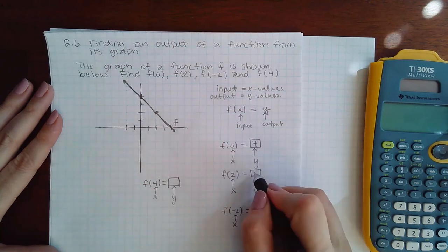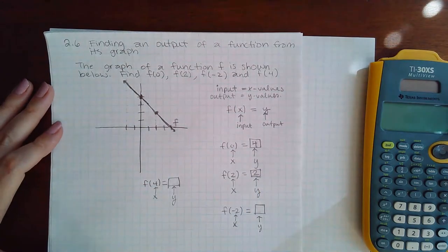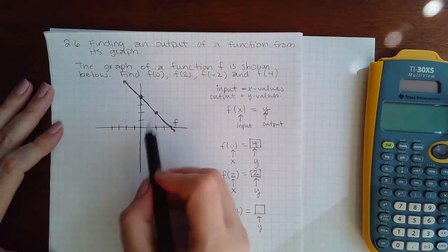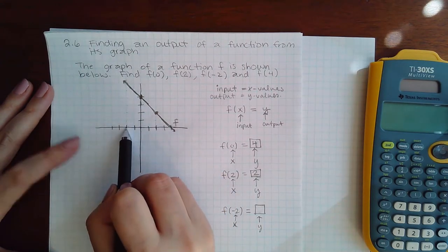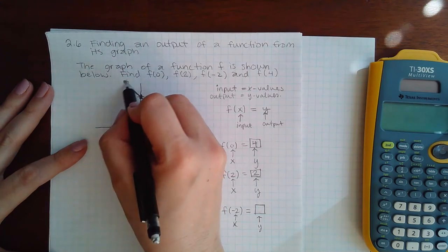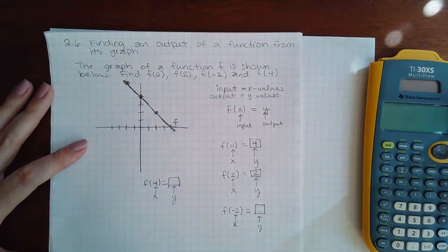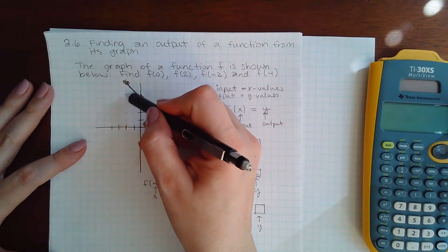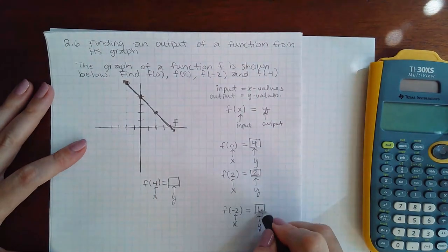Now f(-2) means I'm going to come over to the left hand side where x is -2. I have to go up to get to my function and it lands right there. What is that y coordinate? 1, 2, 3, 4, 5, 6. So the y coordinate here is 6.